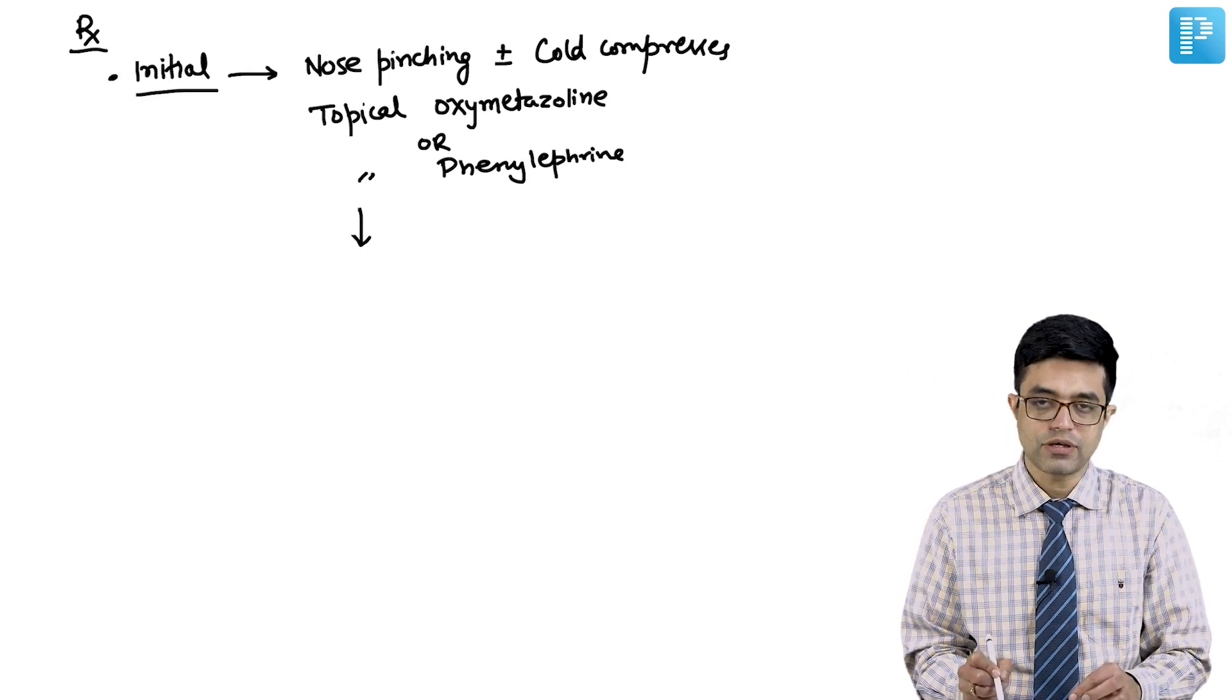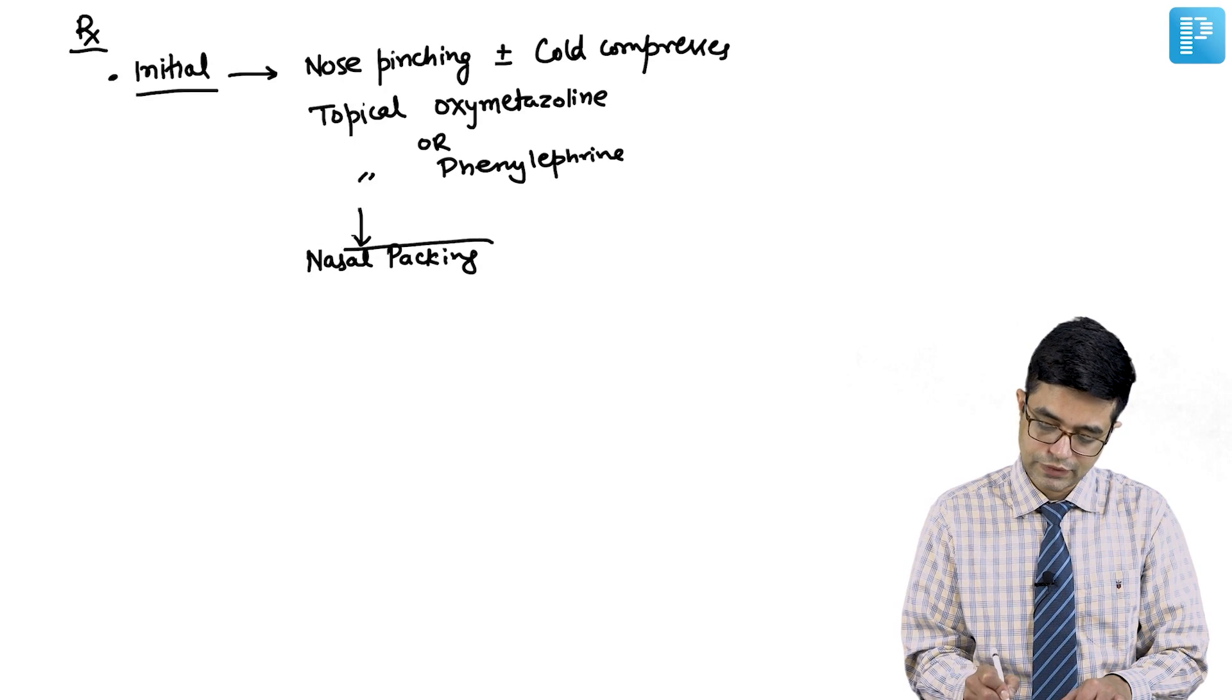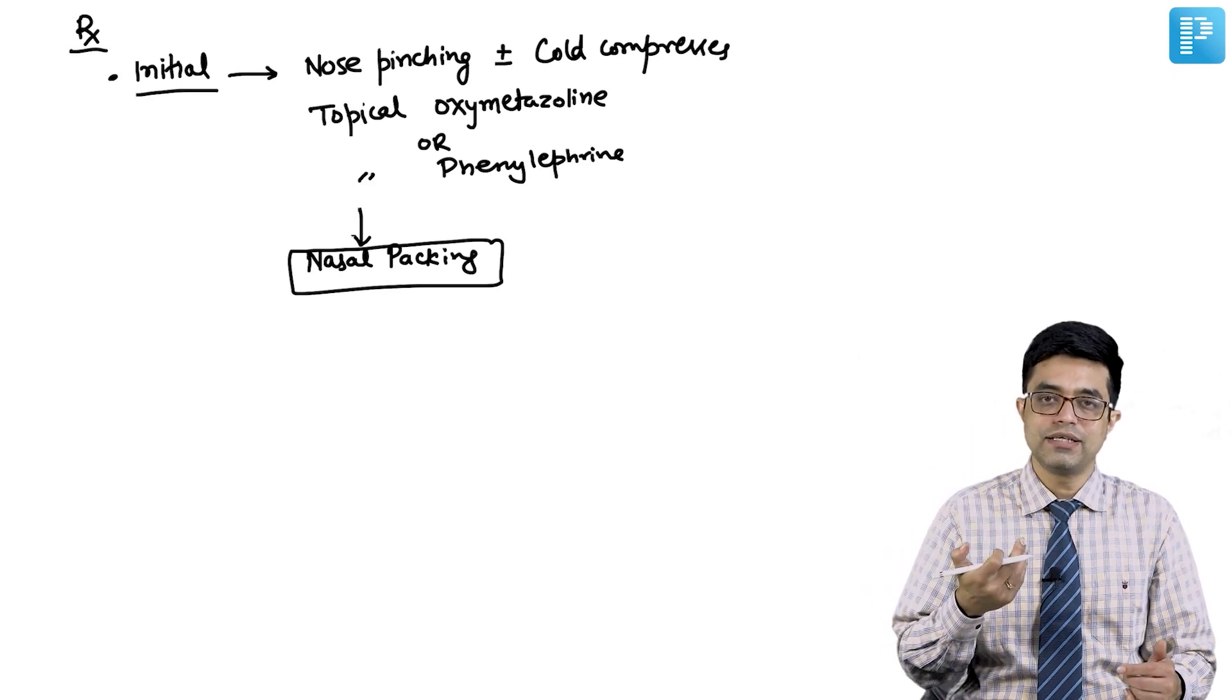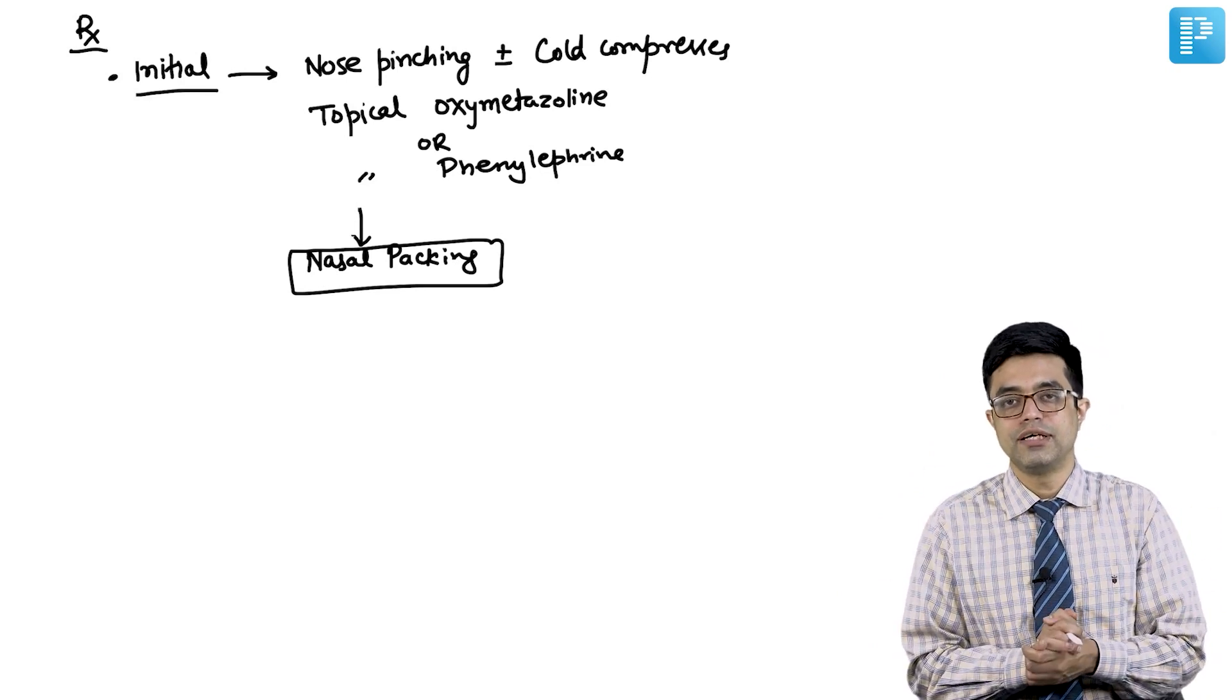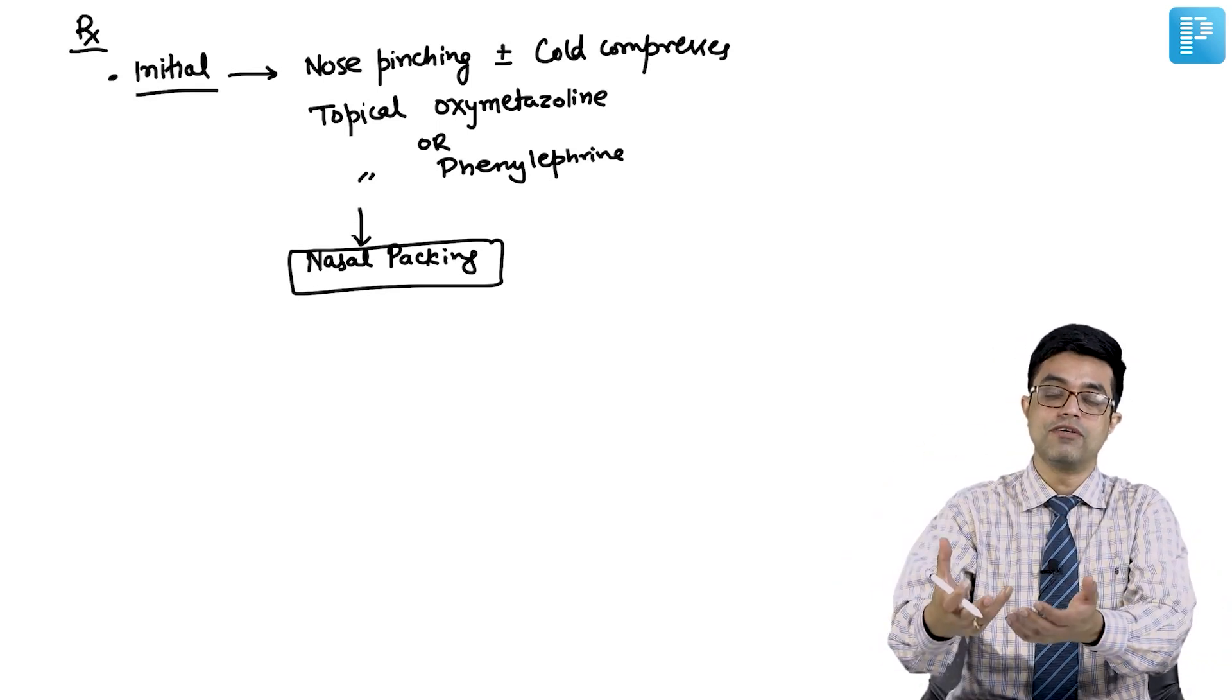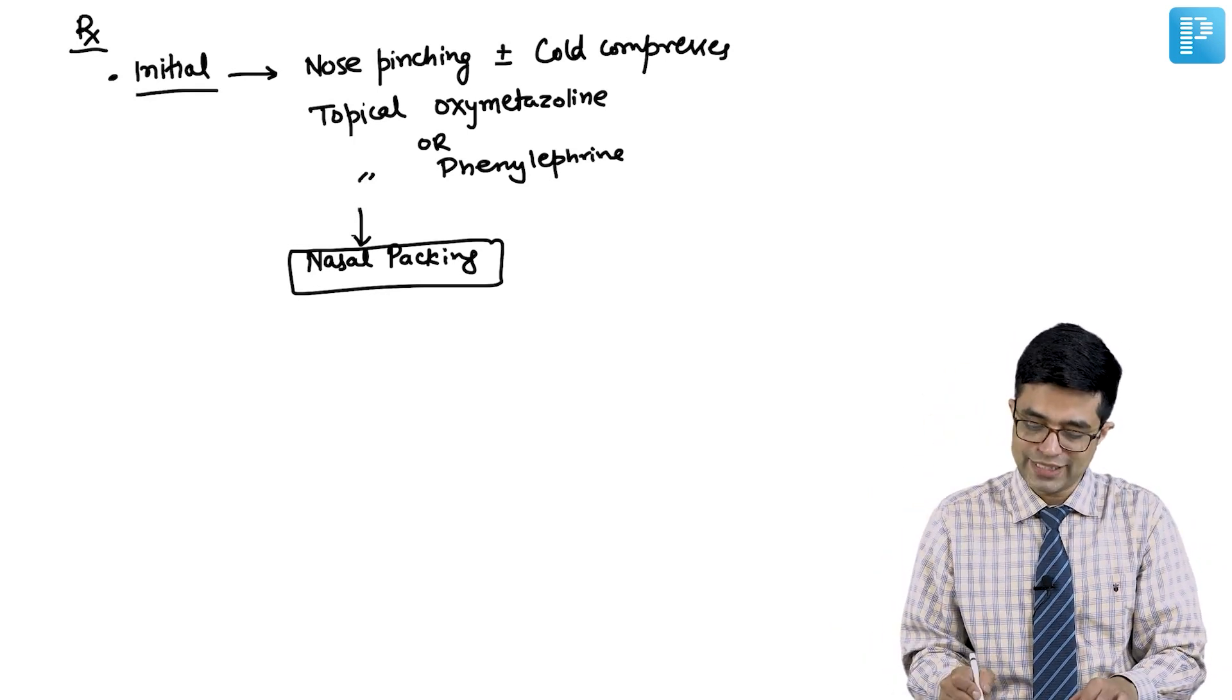In case it does not stop, then you will have to do nasal packing. In case of anterior epistaxis, blood coming out from the nose forward, then you will do anterior nasal packing. In case there is posterior epistaxis, you will do both anterior plus posterior nasal packing. How would you know there is posterior epistaxis? Bleeding will come out in the form of vomiting, like the child will vomit out blood because the blood is going posteriorly into the gut.